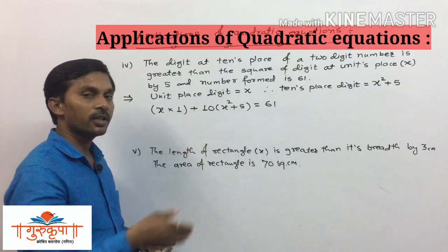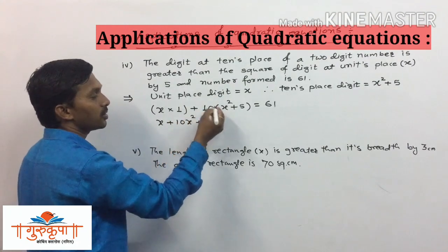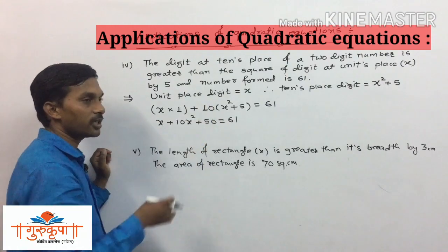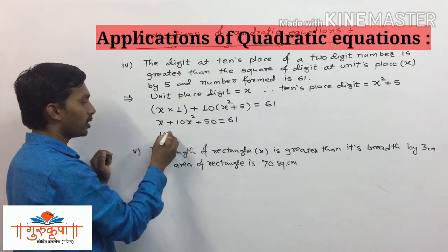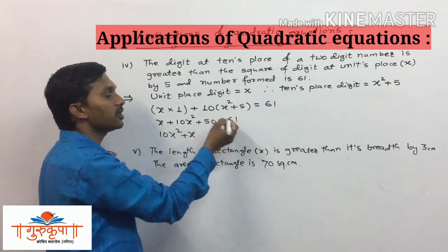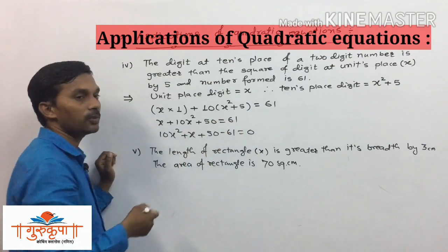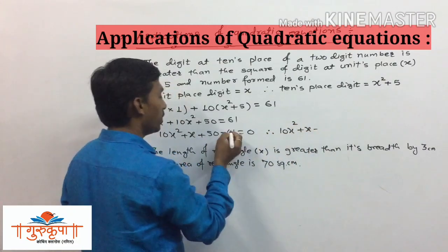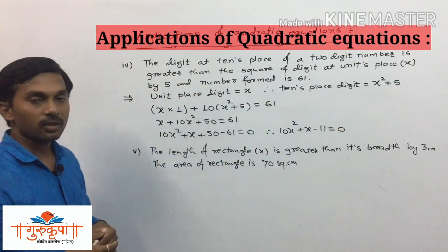Simplifying: x + 10x² + 50 = 61. Writing in standard form — square term first: 10x² + x + 50 - 61 = 0, which gives us 10x² + x - 11 = 0. That is the required quadratic equation.